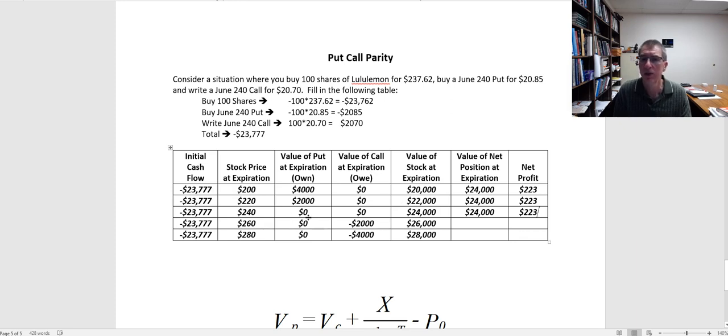At $260, my put's not worth anything and I owe $2,000 for the call that I wrote, but now my stock's worth $26,000. Add those up, it's still worth $24,000, $223 profit. At $280, same process again, value of my position $24,000, net profit $223. What you can see is you can plug in any stock price at expiration and you're going to get the same thing. The value of the net position at expiration is $24,000. I get a net profit of $223.